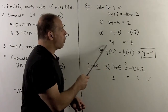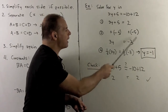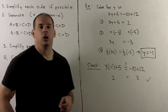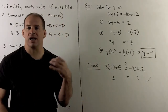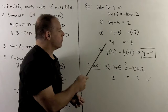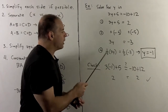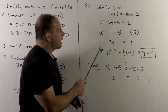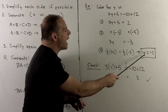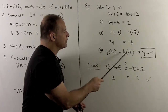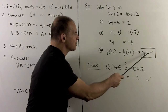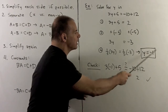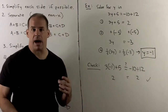Now we have all y terms on one side, all non-y terms on the other. We move on to isolate y. I'm going to multiply both sides by one-third. On this side, the one-third and the 3 cancel, leaving me with y. On this side, one-third times minus 3 gives me minus 1. So y equals minus 1.